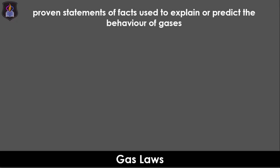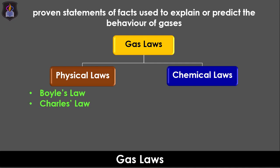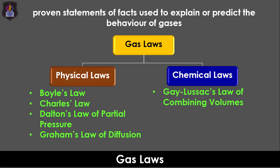Gas laws are proven statements of facts used to explain or predict the behavior of gases under certain conditions. They are empirical findings from the study of ideal gases and are generally divided into the physical laws and the chemical laws. The physical laws include Boyle's law, Charles' law, Dalton's law of partial pressure, and Graham's law of diffusion, while the chemical laws are Gay-Lussac's law of combining volumes and Avogadro's law.